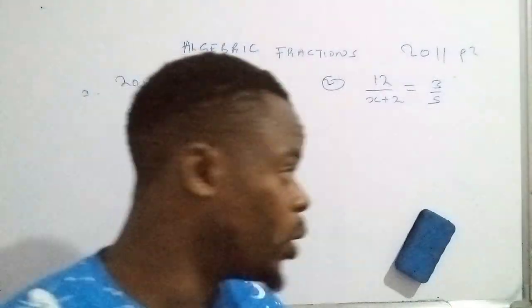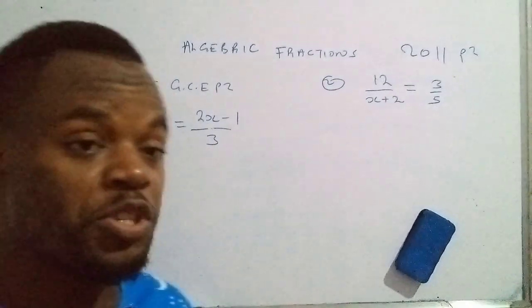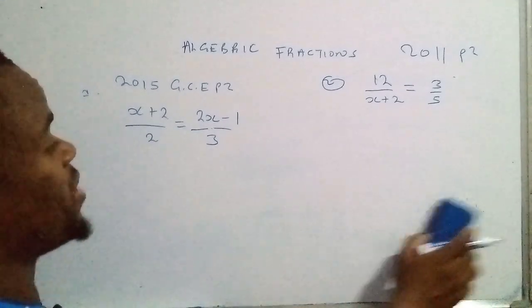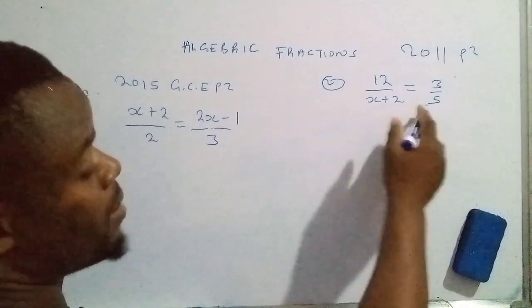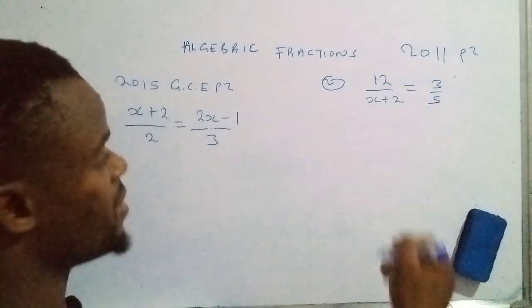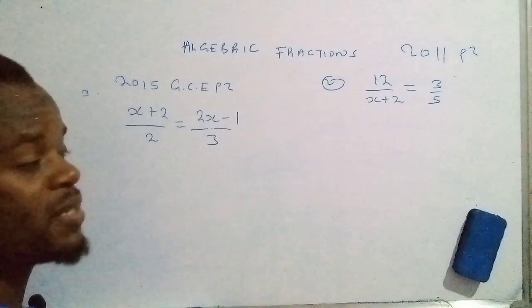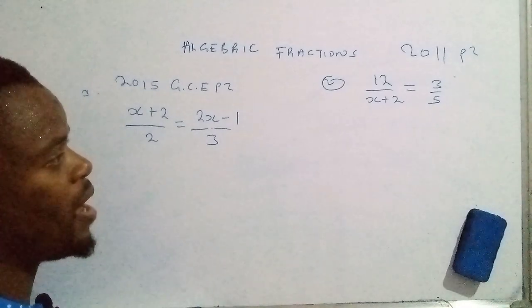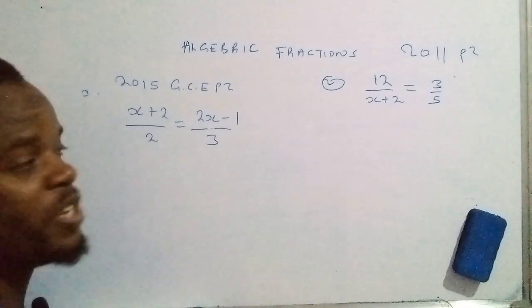All right, let's take a look at how we can handle problems that have to do with algebraic fractions. Algebraic fractions come in this form: you have variables here and there, and then you have two fractions that are separated by an equal sign. So the question is, how do you work out such problems as these to the end?